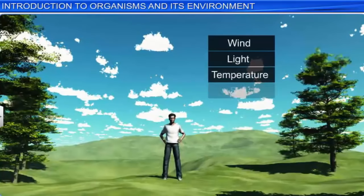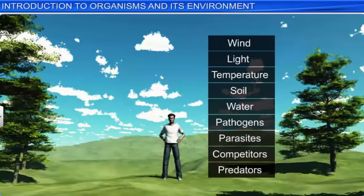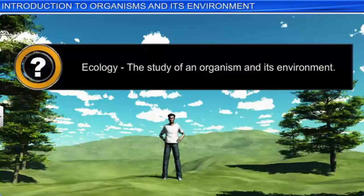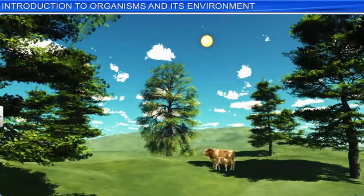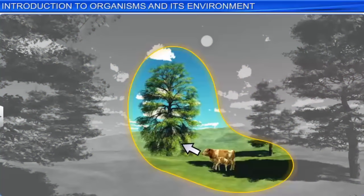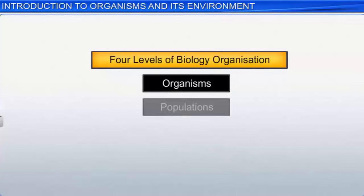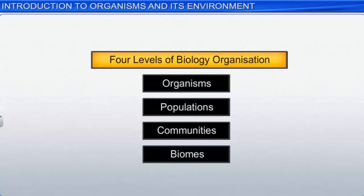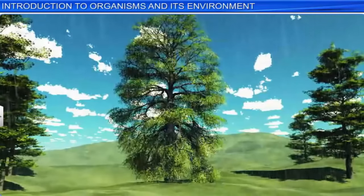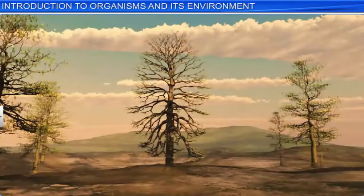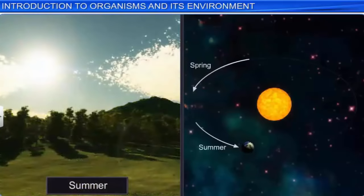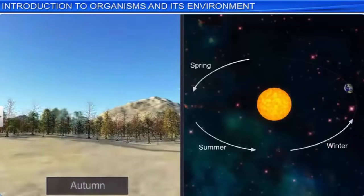Just like this tree, we too are constantly interacting with our environment. Did you know that the study of an organism and its environment is the traditional definition of ecology? Although various ecologists define it differently, ecology invariably studies the interactions among organisms and between the organism and its abiotic environment. It is studied at four levels of biological organization. Interestingly, the abiotic environment never remains constant all year round.